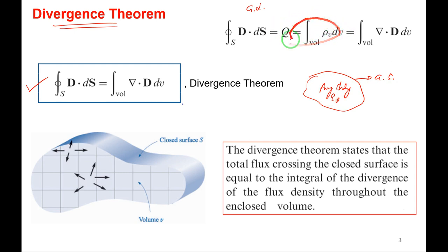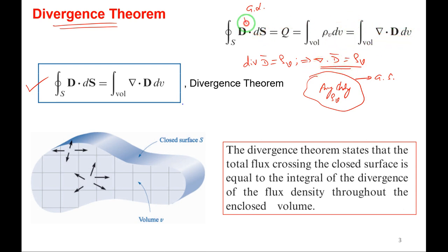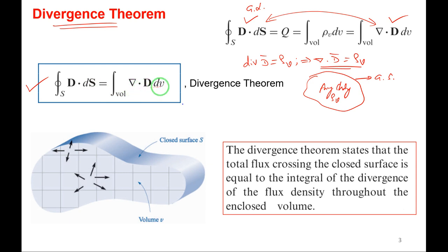We know that divergence of D vector equals ρv — this is Maxwell's first equation, also called the point form of Gauss's Law. So instead of divergence of D, I can write del·D = ρv. Substituting into the volume integral, we get (del·D)·dV. Equating the two expressions, we get the divergence theorem: closed surface integral of D·dS equals volume integral of (divergence of D vector)·dV.